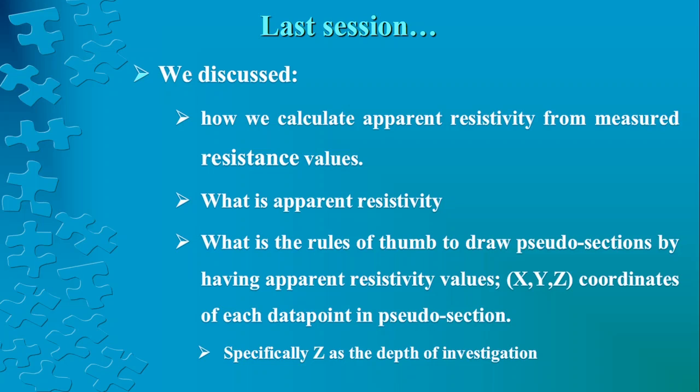We know that apparent resistivity is the resistivity of a homogeneous half space that would be measured with the same electrical electrode configuration. It is not the true resistivity value of subsurface materials, so the Pseudo-section which uses apparent resistivity values will not provide us true sections of subsurface.